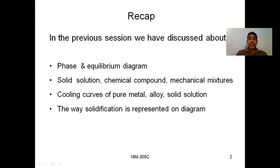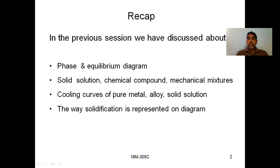We also discussed what is meant by a solid solution and types of solid solutions — substitutional solid solutions and interstitial solid solutions — and the difference between them. We defined a chemical compound and a mechanical mixture, and drew cooling curves for pure metal, alloy, and solid solution. We discussed the solidification process, polymorphism, and the allotropic forms of pure iron on a cooling curve.